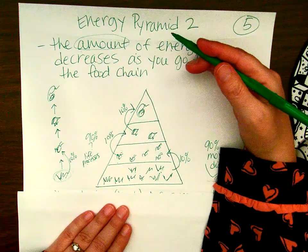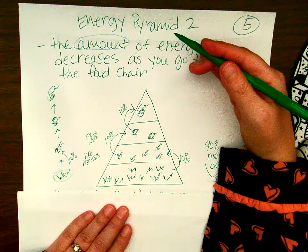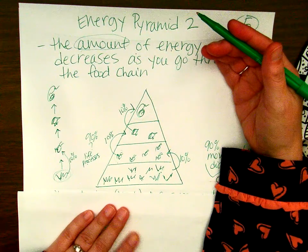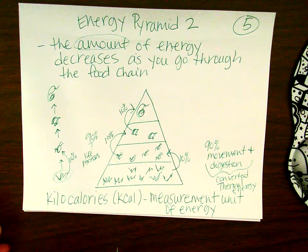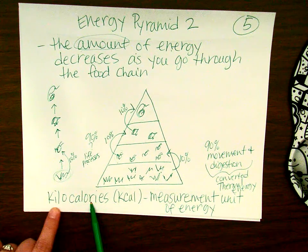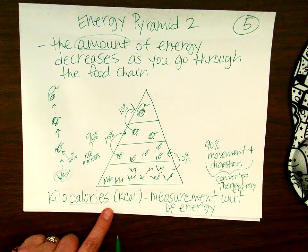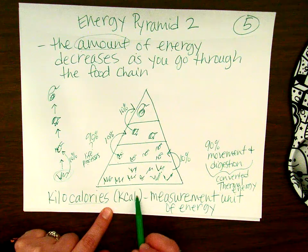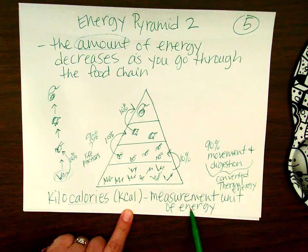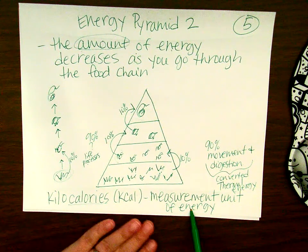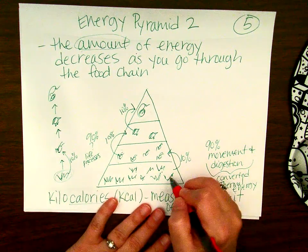Everything has measurement units — we measure distance in feet or miles, mass in grams. We can measure energy as well, and that measurement is called kilocalories. You've probably seen the word 'calories' on food labels. We abbreviate it as kcal, and kilocalories is the measurement unit of available energy.